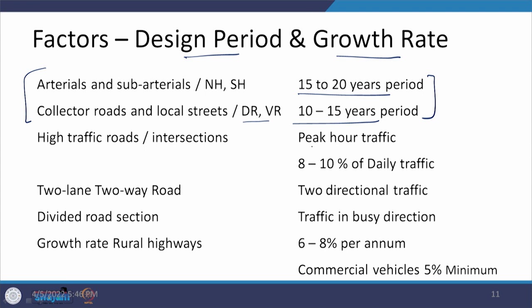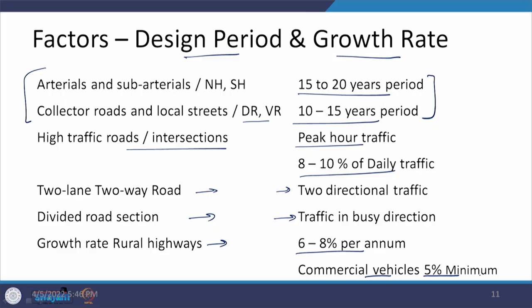Peak hour traffic is usually considered in urban areas — that is 8 to 10 percent of daily traffic for high-traffic roads or intersections. For a 2-lane 2-way road, both directional traffic is considered. For a divided road section, traffic in the busy direction is considered — hence DDHV. For rural highways, the growth rate is taken as 6 to 8 percent per annum, and for commercial vehicles a minimum of 5 percent. If you have area-specific data, that can be used instead.